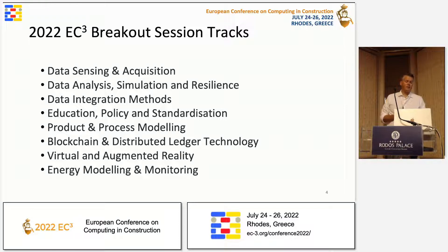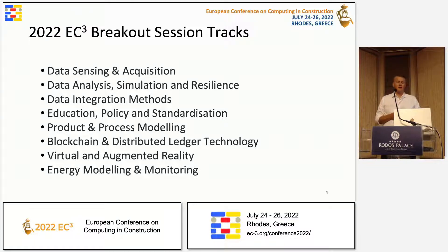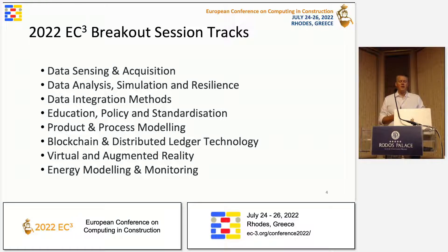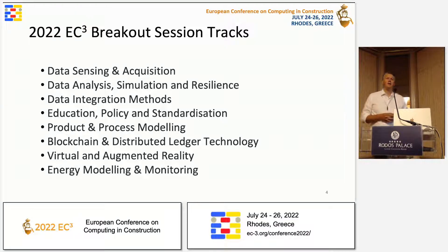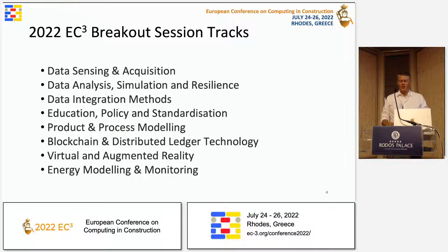EC3 has eight different tracks, and if you look in your program you'll also see this represented: data sensing and acquisition, data analysis, simulation and resilience, data integration methods, education policy standardization, product and process modeling, blockchain and distributed ledger technology, virtual and augmented reality, and energy modeling and monitoring. We thank all of you for your submissions into these tracks and that we can find a way now to present this great work back to the community.